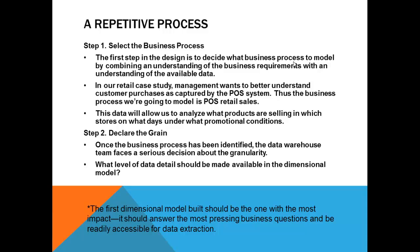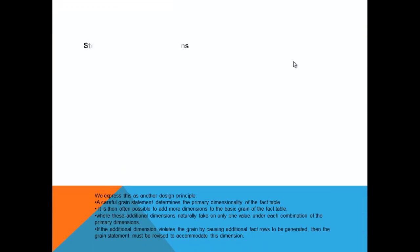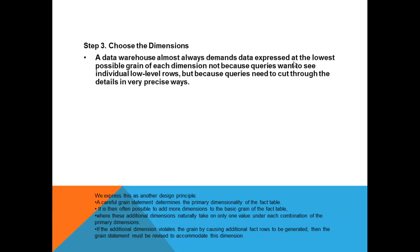So the third step: Choose the Dimensions. A data warehouse almost always demands data expressed at the lowest possible grain of each dimension — not because queries want to do individual low-level roles, but because queries need to cut through the details in a very precise way. You can keep adding any number of dimensions; there is no restriction. A fact can be surrounded by thousands of dimensions. The major three dimensions to sell a product are: product, market, and time.